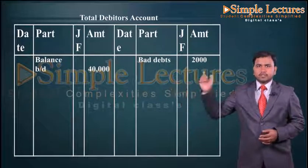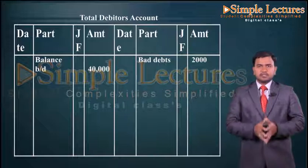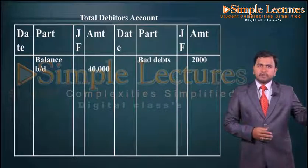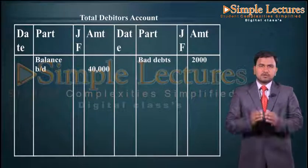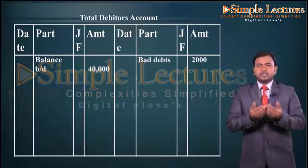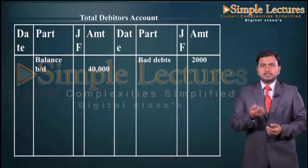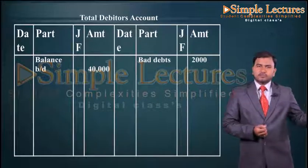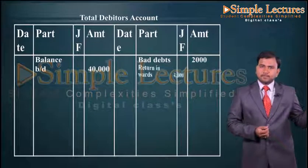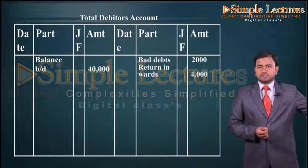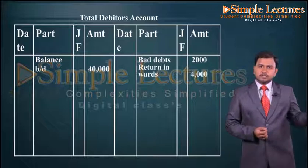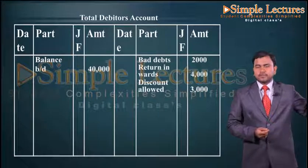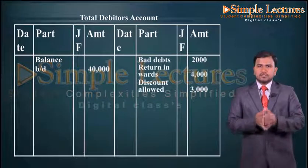Coming to the total debtors account, the opening entry will be on the debit side: balance brought down forty thousand. Then we have bad debts on the credit side: bad debts two thousand. Then return inwards — goods sold which have been returned back — will be on the credit side: return inwards four thousand. Then discount allowed, again on the credit side: discount allowed three thousand.